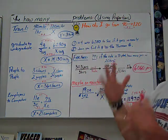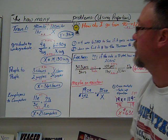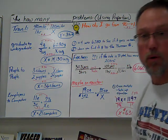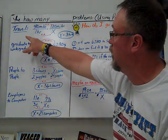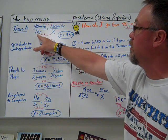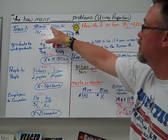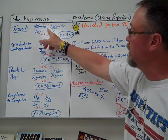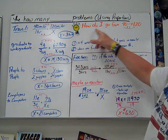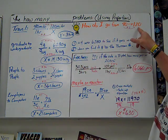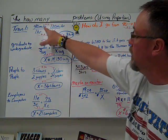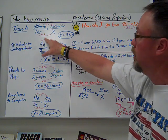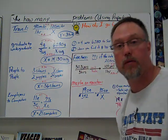This is the how many problems. You want to use proportions. We set two ratios equal to each other. For travel, we have 40 miles in an hour. How many hours would it take to go 120 miles? Set it up as two ratios equal to each other. How do I go from 40 to 120? Multiply by 3. Whatever I multiply here, I multiply here to get my answer. 1 times 3, it would take 3 hours to drive 120 miles.